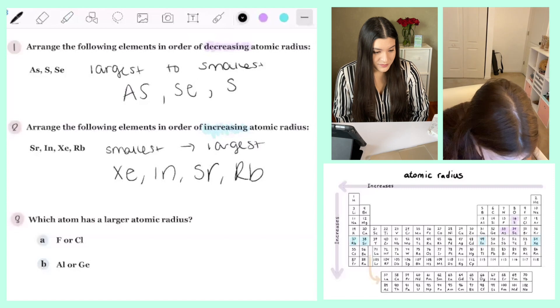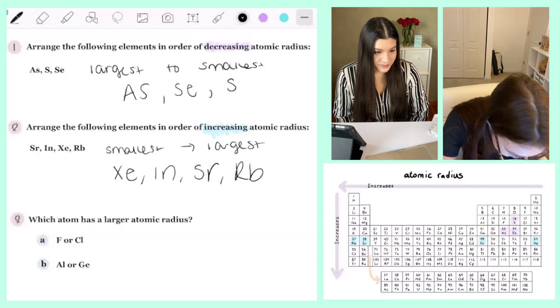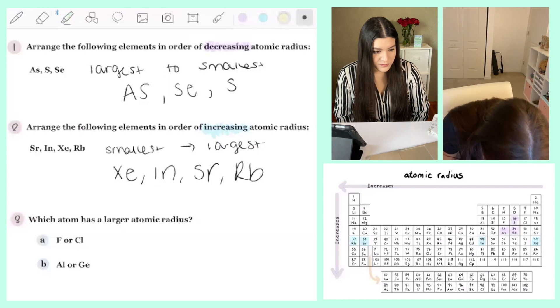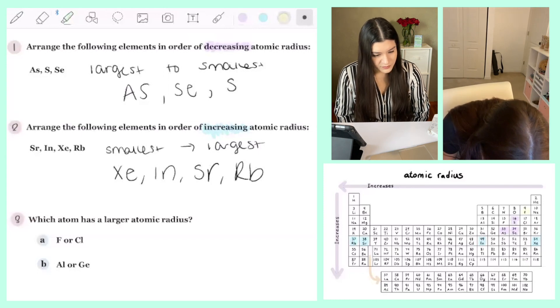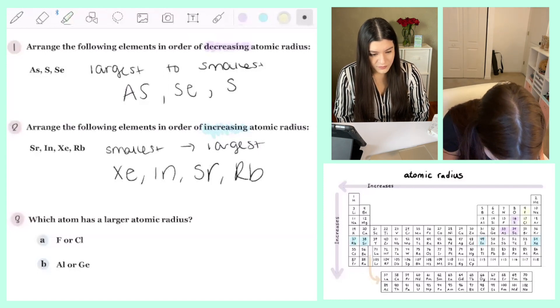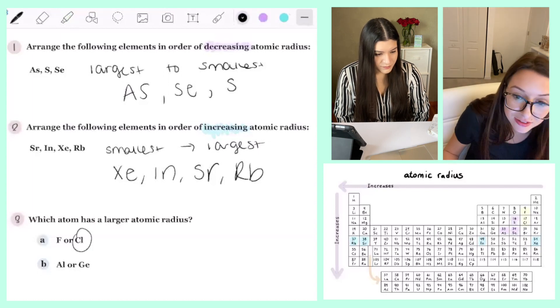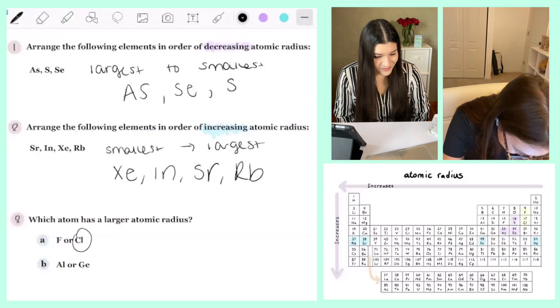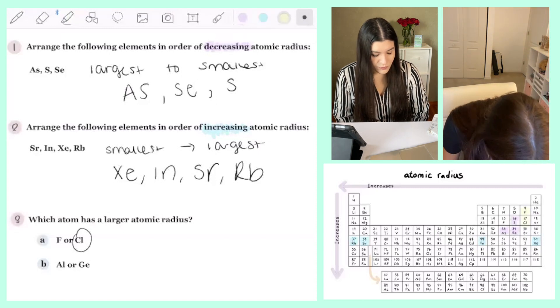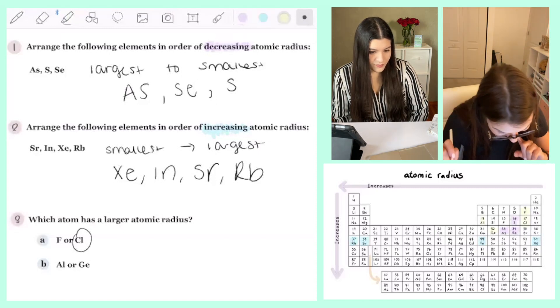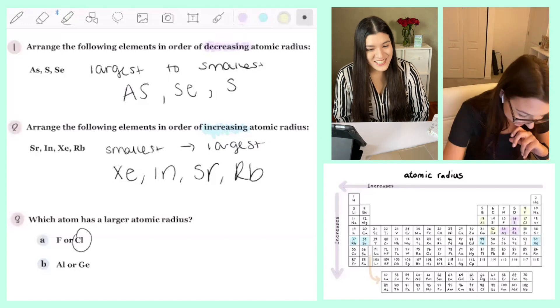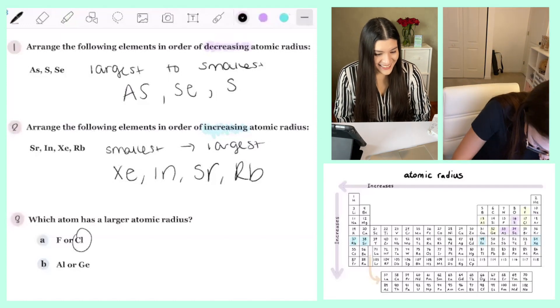Which atom has a larger atom? So here's F. The larger atomic radius is going to be chlorine. Good. And then Al. This is opposing. Yes, this is opposing. Correct.